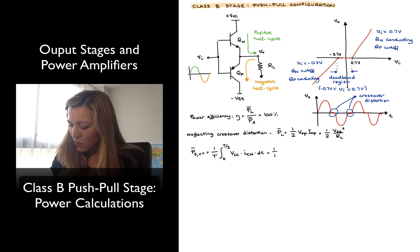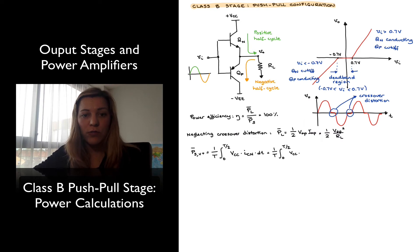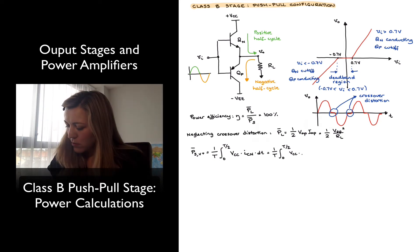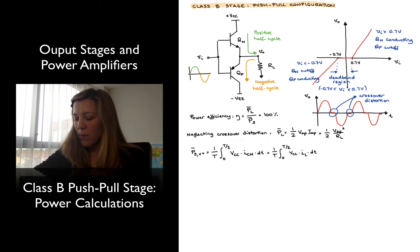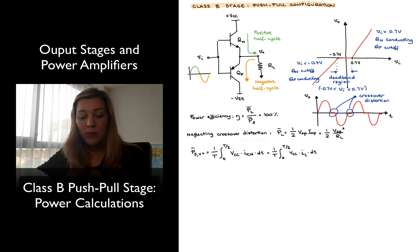I can express this as 1 over T, the integral from 0 to T/2, of VCC times the current flowing through transistor QN during the positive half cycle. All of that current flows through the load resistor since QP is in cutoff, so there is no current flowing through QP. I can express I_CN as the current flowing through the load, which equals VO divided by RL. So if VO is a sinusoidal signal, we can express it as VOP times the sine of ωT.